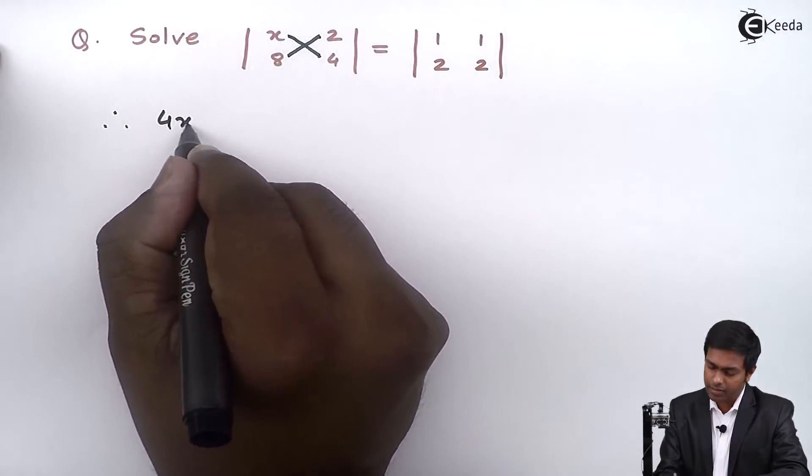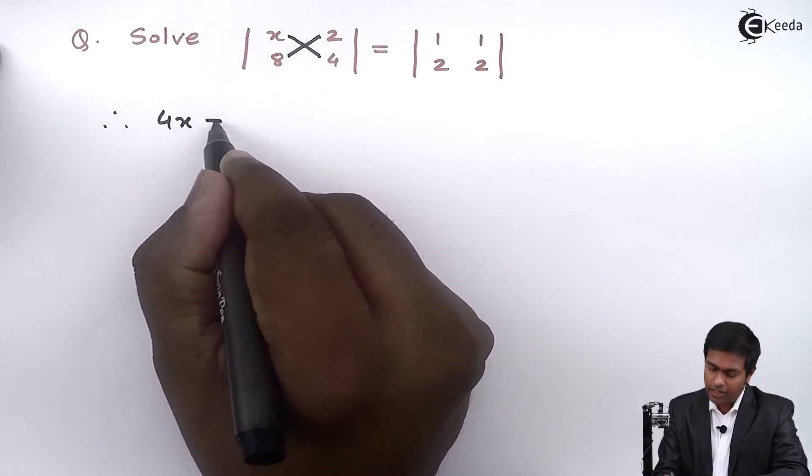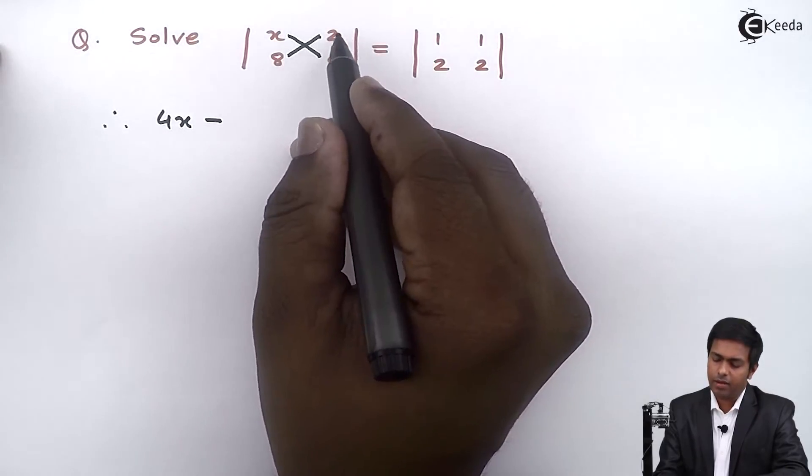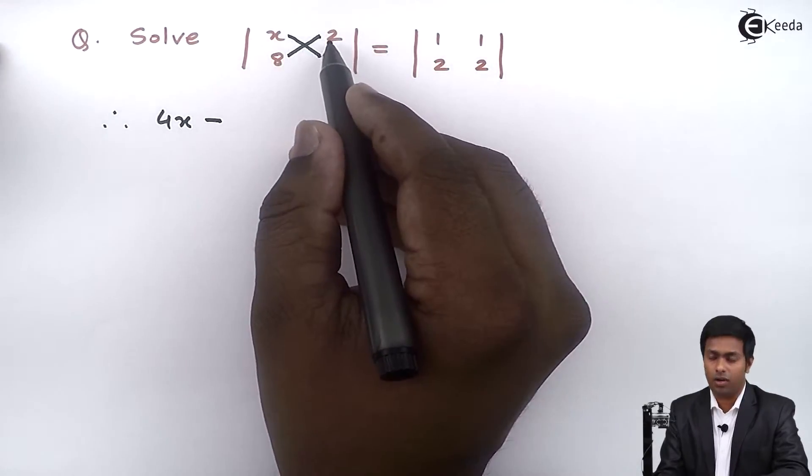So 4 into x is 4x, minus we will subtract the multiplication of the elements of the secondary diagonal.